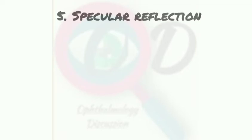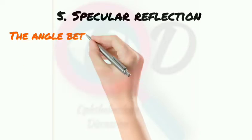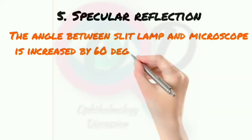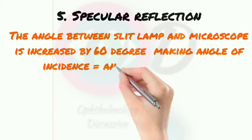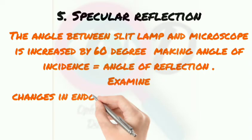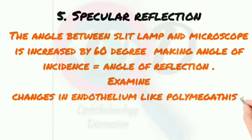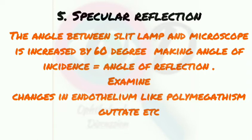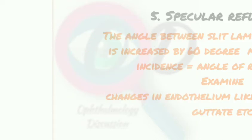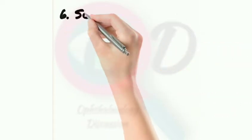The fifth type is specular reflection. In specular reflection, we increase the angle between the slit lamp by 60 degrees, making the angle of incidence equal to the angle of reflection. This is used to examine changes in the endothelium, like polymegathism and other conditions.